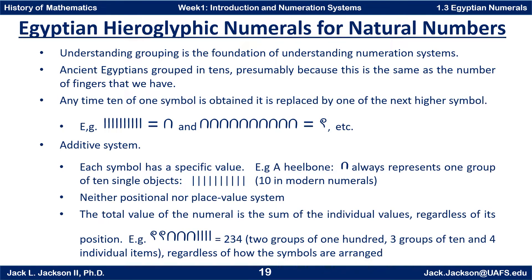As we discussed in the previous videos, the foundation of understanding any numeration system is understanding how they grouped objects. The ancient Egyptians used a grouping in groups of ten as the basis of their numeration system, presumably because this is the same as the number of fingers that we have. You will find groups of ten familiar since we use it as part of our modern number system.